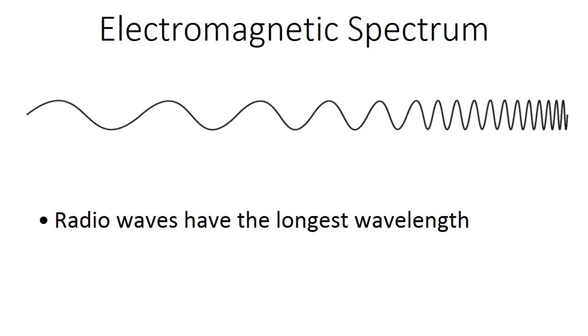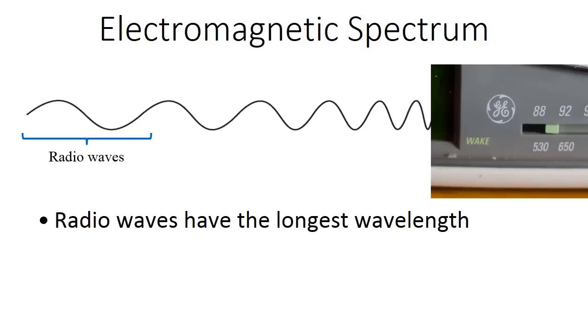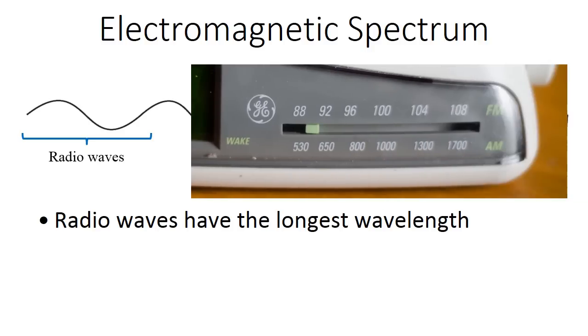We'll start off with radio waves, which have the longest wavelength out of the ones that we're looking at. And they're going to be way over here at the left side where the wavelengths are nice and long. If you look at any radio, those numbers there are the frequencies you're tuning into. And I think I'm at around 89 here. I think that's the channel I'm on. So at that frequency, the wavelength is actually around 3 meters.